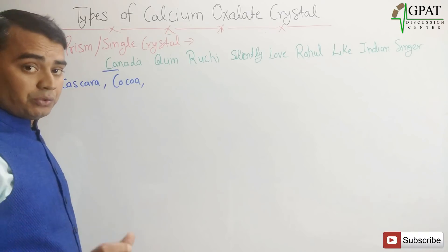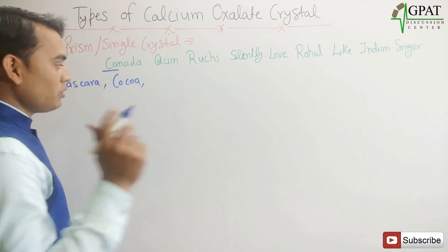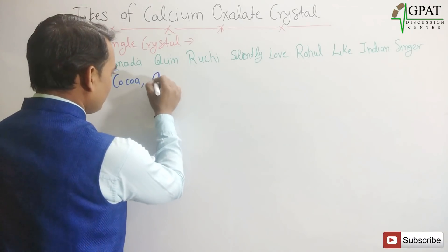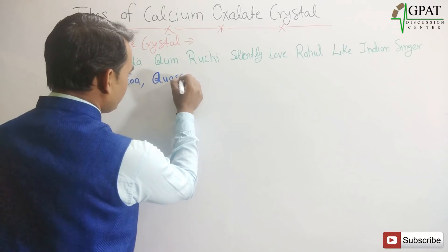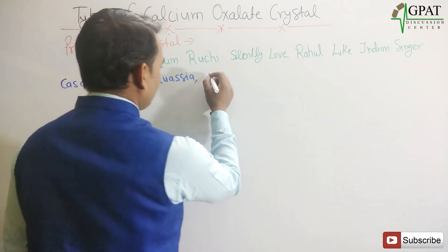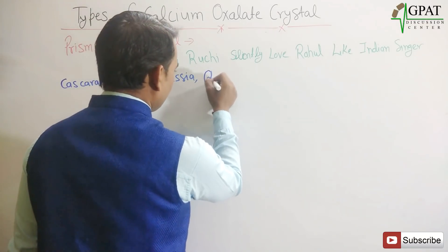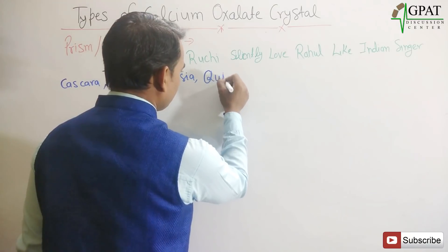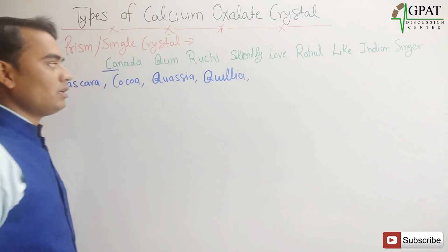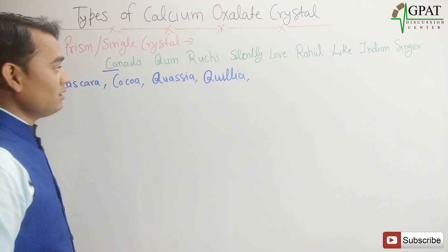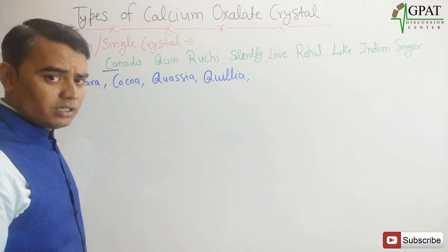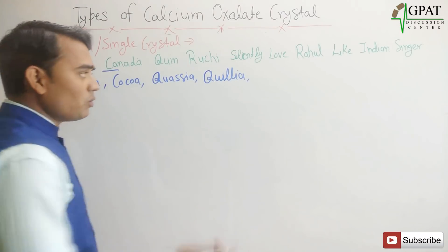'Queen' gives Q, and from Q two drugs come: Quassia and Quillia. Next, 'Ruchi' gives R — which stands for Kurchi. So Ruchi = Kurchi.